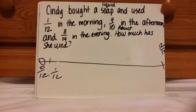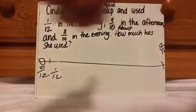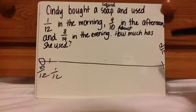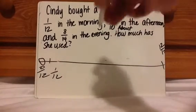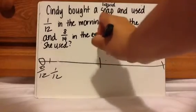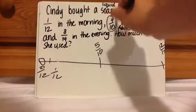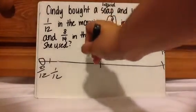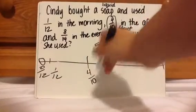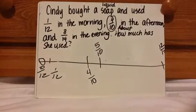Now we also have 4/10 in the afternoon. When you look at tenths, if you were to imagine this in tenths, this would be 0/10, this would be 10/10. Then halfway would be 5/10. Well, they said she used 4/10, so that would be right around here. You could say she used about half in the afternoon, not exactly but close to it, because 5/10 is half.